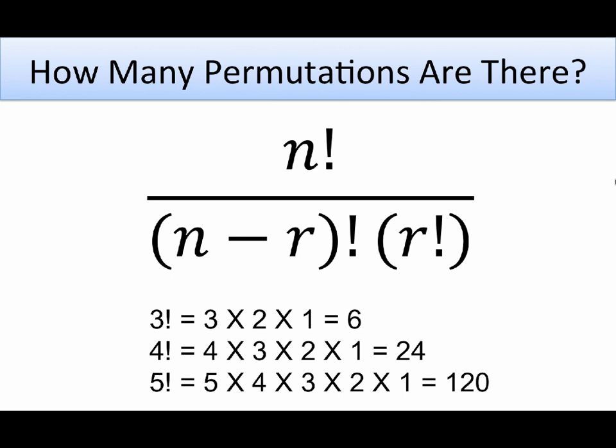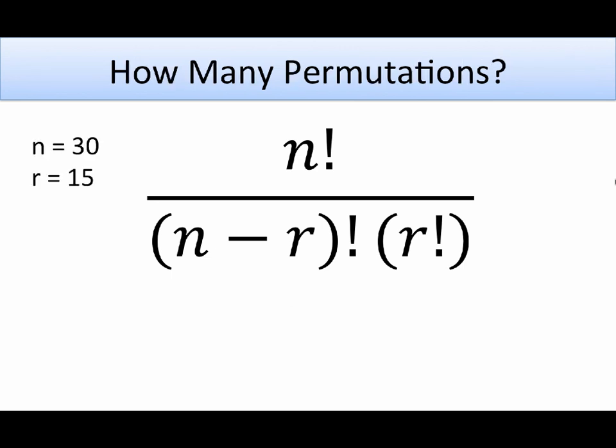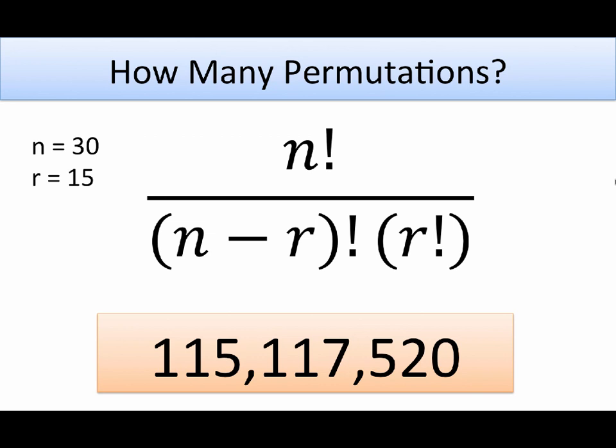Here is the formula for determining the number of permutations from a given number of scores and the number of cases in one of the two groups. N equals the total number of scores - in our case, that was seven - and r is the number of scores in one of the two groups. In case you're not familiar with that exclamation point, it simply refers to the idea of factorial. Three factorial would be simply three times two times one. Four factorial, you just multiply that by four. If we have more typical examples, such as 30 scores with 15 in each of the two groups, here is the total number of permutations: 155,117,520.